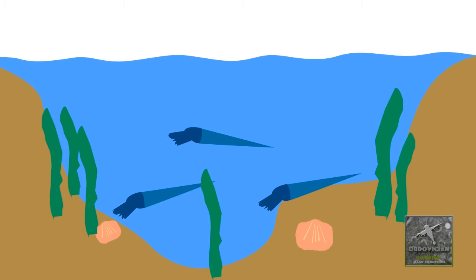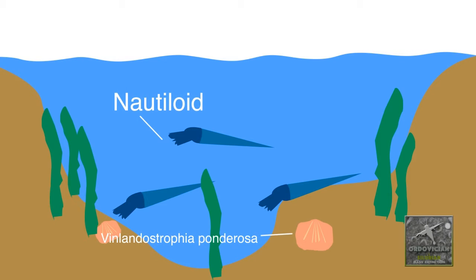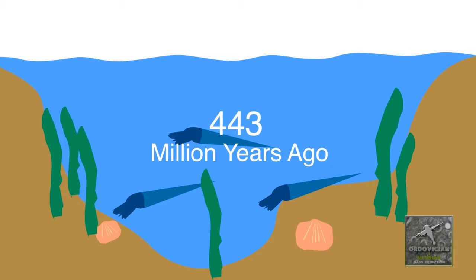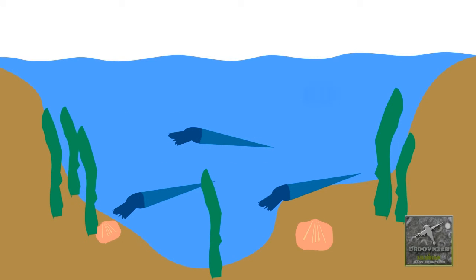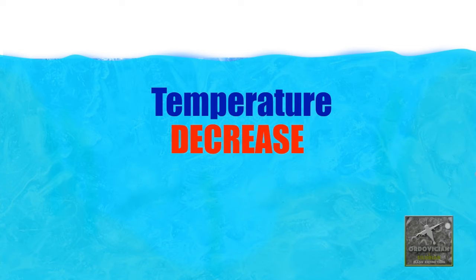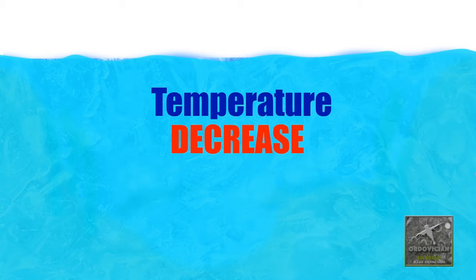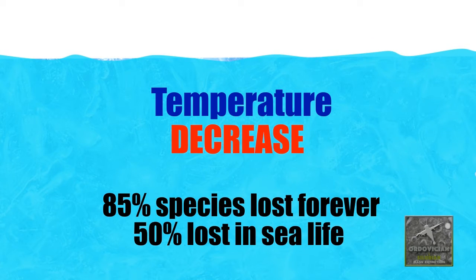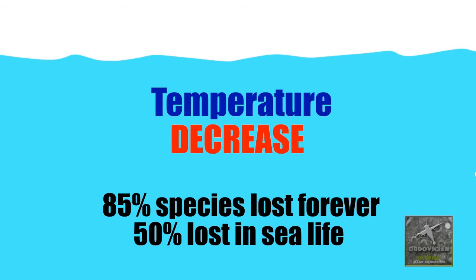The first is the Ordovician-Silurian mass extinction. During the Ordovician period, most species lived in the sea. This was true until about 443 million years ago. The event was caused by a fall of carbon dioxide in the early atmosphere. Colder climate created glaciation, or the freezing of seawater. This caused sea levels and temperatures to drop, and an ice age was formed. Many species died. Approximately 85% of life and at least 50% of all marine species were wiped out forever.